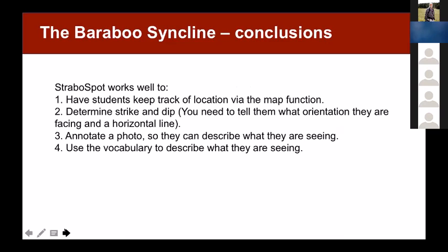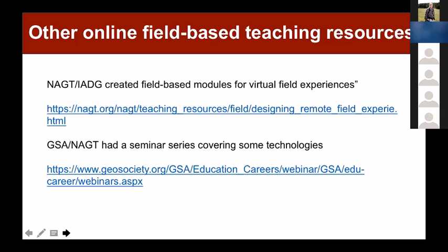So in conclusion, what we found out from doing this is the students can keep track of location pretty well. We got them to take care of Strike and Dip, which seems trivial but they have a problem with it. The ability to annotate a photo is really helpful for them in the field. And there's ability to have a blank piece of paper if you want them to sketch — it's a little clunky right now, but it won't be in the future. The drop-down menus with controlled vocabulary are quite useful, so they can say, what kind of foliation is it?